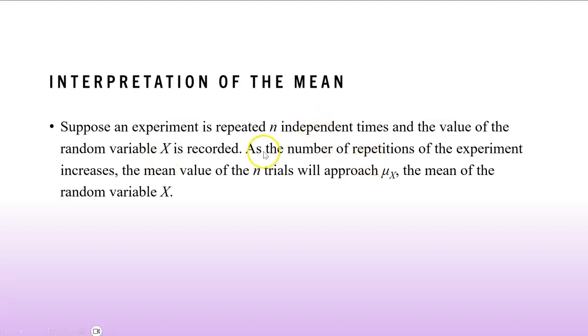As the number of repetitions of the experiment increases, that means the more times you do it, the mean value of n trials will approach mu of X, which is your mean. So it's saying the more times you do the experiment, the closer the mean of your actual results will get to the mean that we calculated. So if you repeat the experiment over and over, the more times you do it, the closer your value will get to the calculated mean. That's what the mean represents.